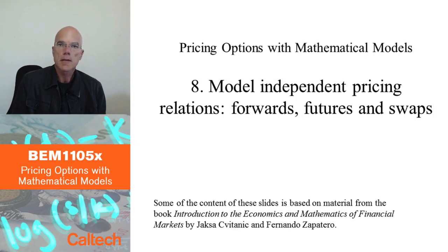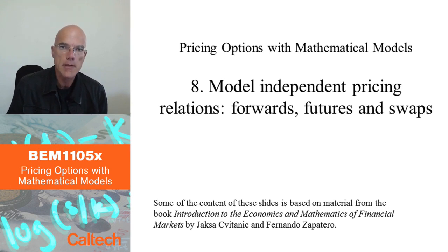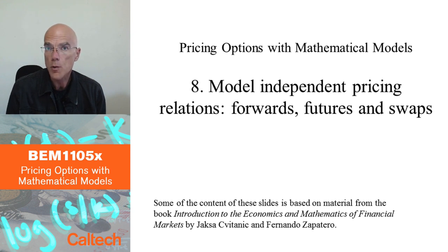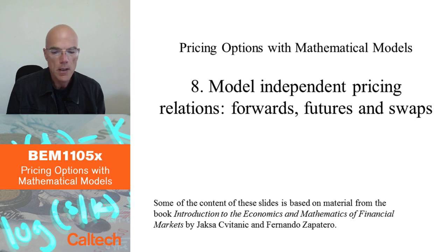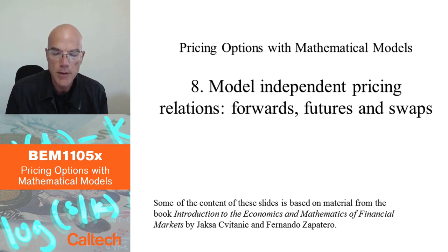Let's start pricing our first derivatives, starting with the easiest ones to price, which are linear functions of the underlying assets: forwards, futures, and swaps. We are going to see that we can price those instruments no matter what our mathematical model is for the underlying price. We will only need to know the value of the underlying price, not the mathematical model for it — that's why we call these model-independent pricing relations.